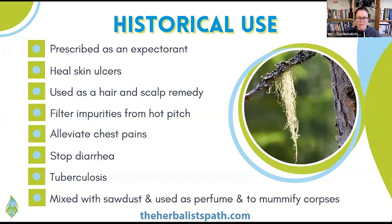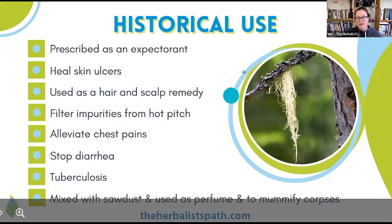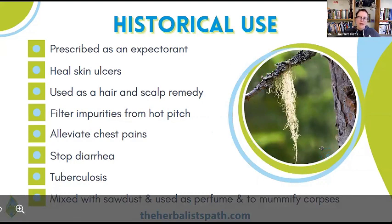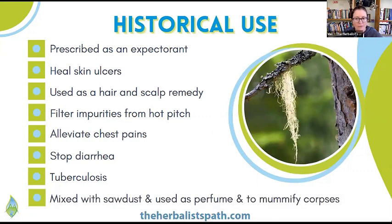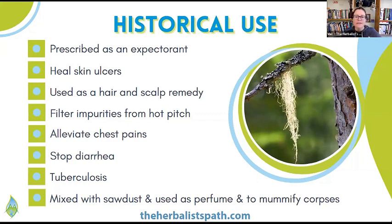One thing to think about is the doctrine of signatures. With usnea, we might think about how it looks like our hair, so maybe we could use it as a hair and scalp remedy — and in fact, it was used as such. The Haida natives used fibers of Usnea longissima to filter out impurities from hot pitch before using it medicinally. There's also an Arctic pharmacognosia where the Aleut reported using reindeer moss tea for chest pains, and native hunters used it to maintain their breath and wind while climbing hills.